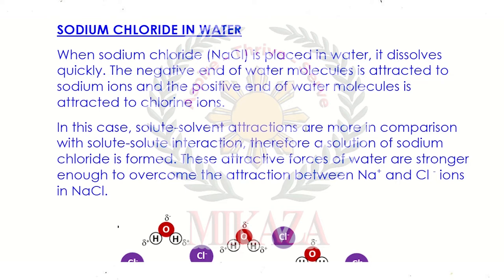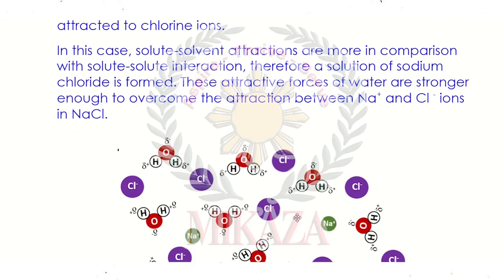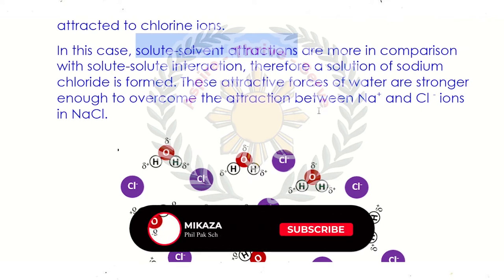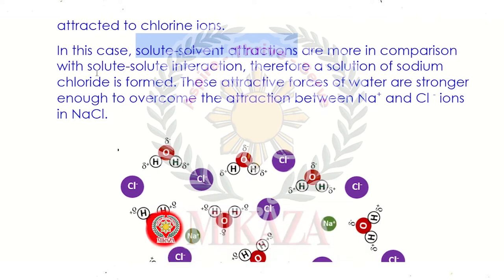Because opposite poles attract, the water molecules surround the sodium and chloride ions. The oxygen of water is attracted to Na⁺ and the hydrogen is attracted to Cl⁻. This solute-solute interaction breaks down, and solvent-solute interactions form — this is why sodium chloride dissolves in water and forms a solution.